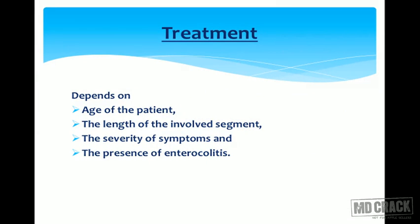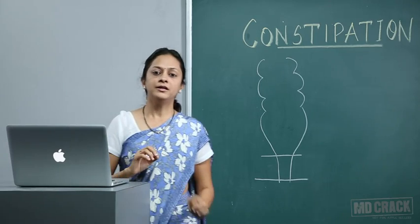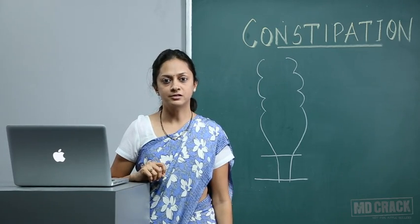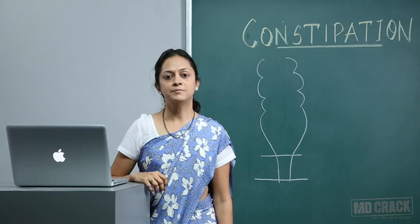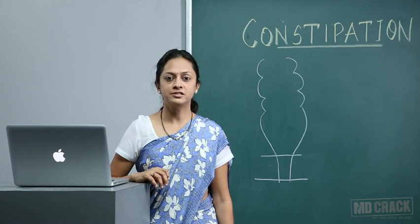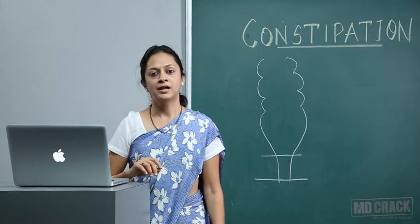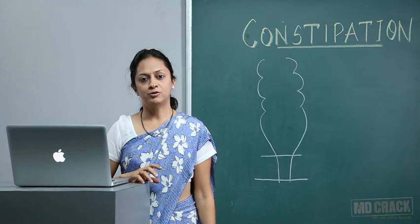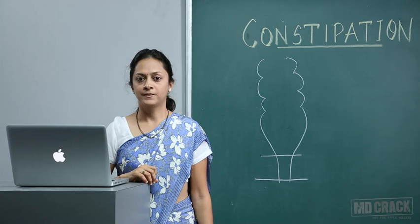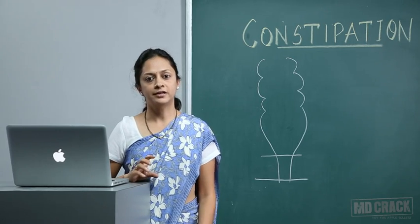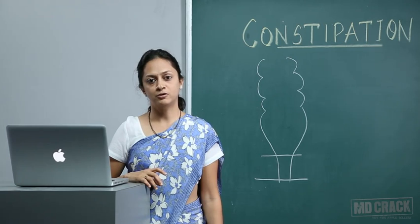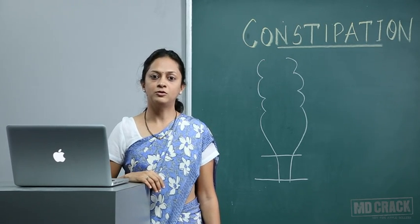Treatment depends on the age of the patient, the length of involved segment, severity of symptoms, and presence of enterocolitis. Initial treatment includes rehydration, systemic antibiotics, nasogastric decompression, and bowel irrigation. If the patient — neonate, child, or adult — does not respond to this therapy, then surgery should be considered.